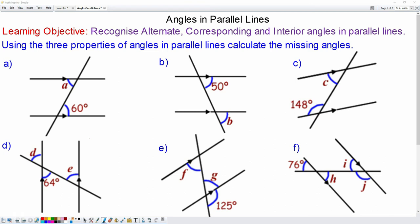In this lesson we're going to recognize alternate, corresponding, and interior angles in parallel lines. We begin with question a. You can see that angle a is in a z shape with the 60 degree angle, which means that they are alternate and therefore equal.